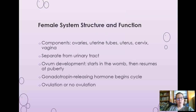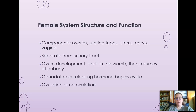We're going to start with the female reproductive system. The components of the female reproductive system are the ovaries, the uterine tubes, the uterus, the cervix, and the vagina. The reproductive tract is separate from the urinary tract, which is not the same in males. The development of the egg starts in the womb, so when a woman is pregnant with a baby girl, the baby girl's eggs are being formed right then.